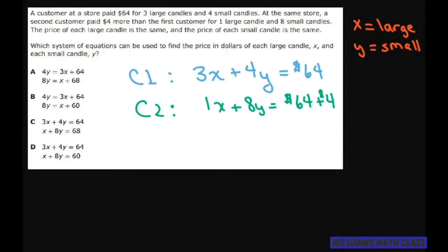So this ends up being 3X plus 4Y equals 64 and this one, that's just X plus 8Y equals 68.